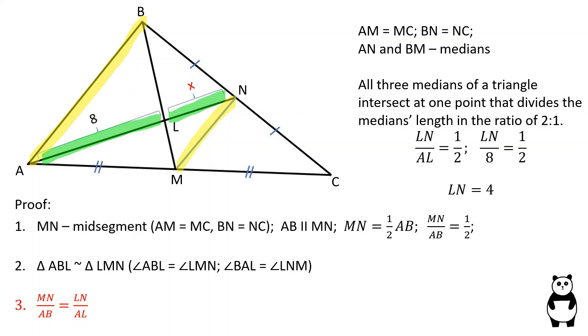In similar triangles, the corresponding sides are proportional. Therefore, MN over AB is equal to LN over AL. And since MN over AB is equal to 1 over 2, LN over AL is also equal to 1 over 2, proving our earlier solution.